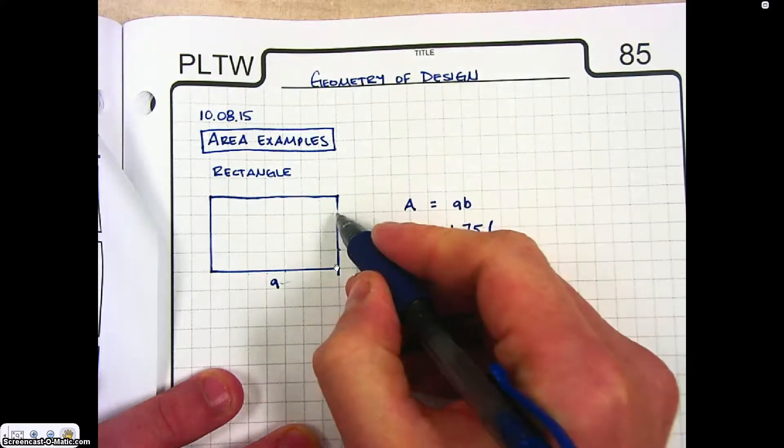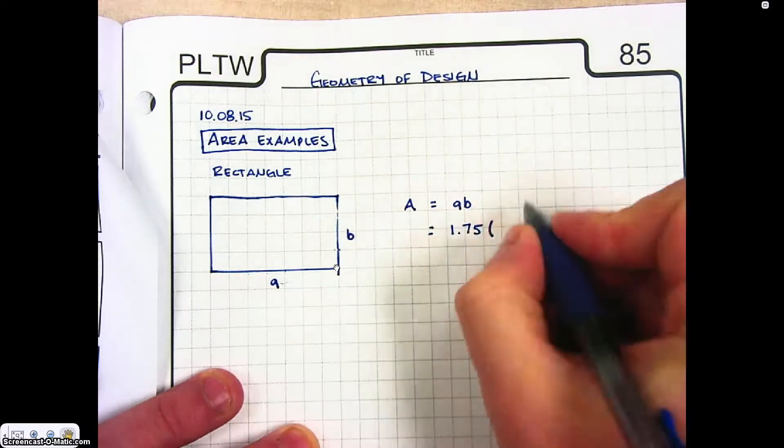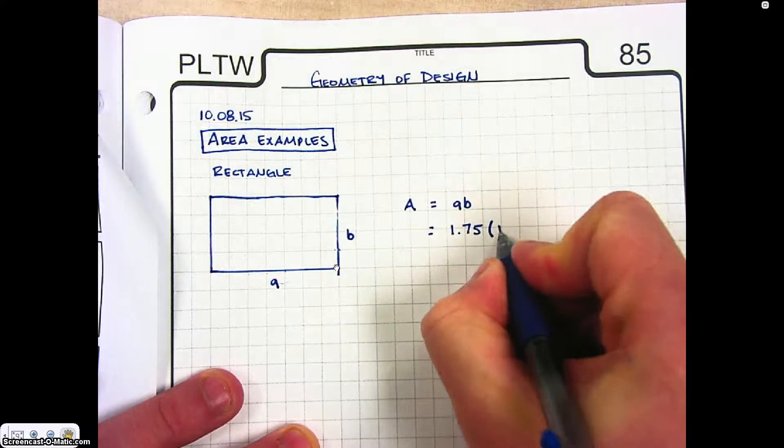Our B is 1, 2, 3, 4. So that would be 1 inch.